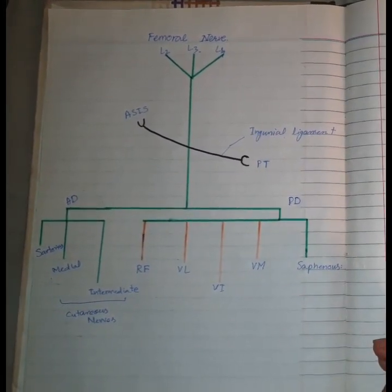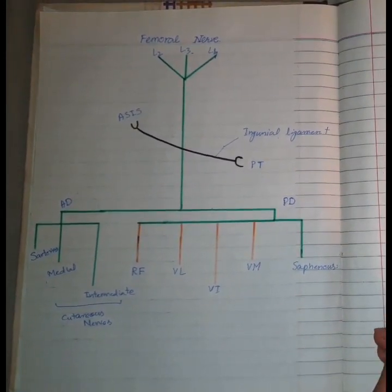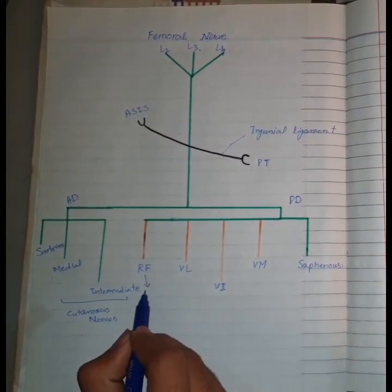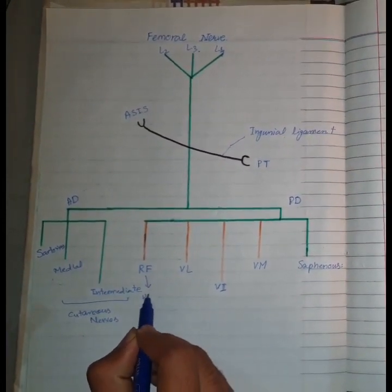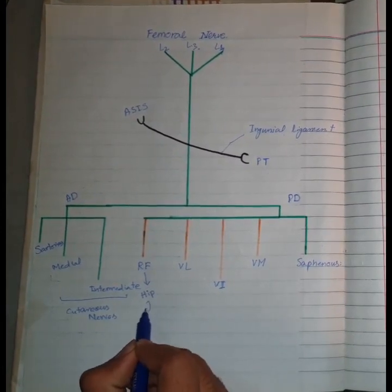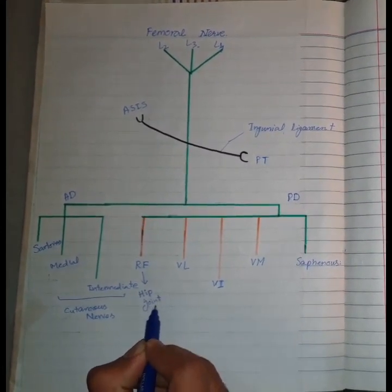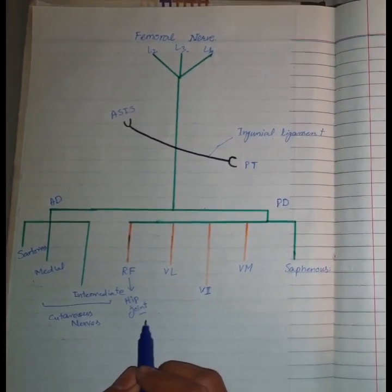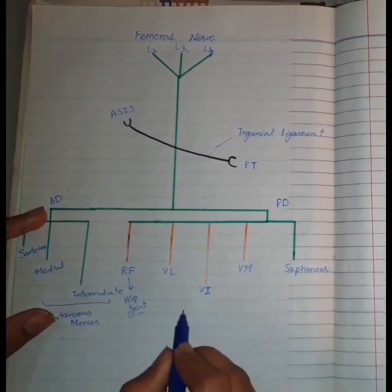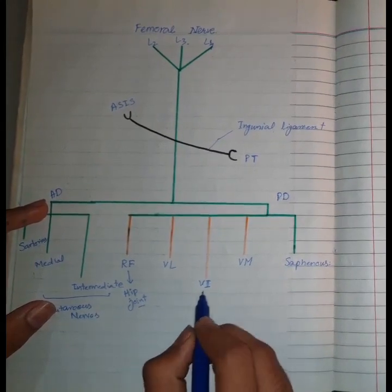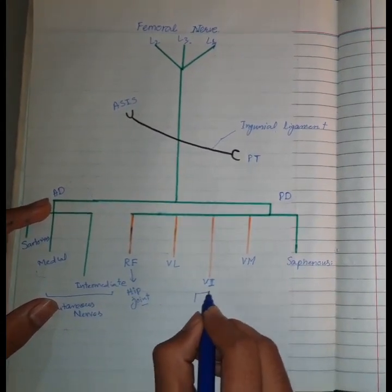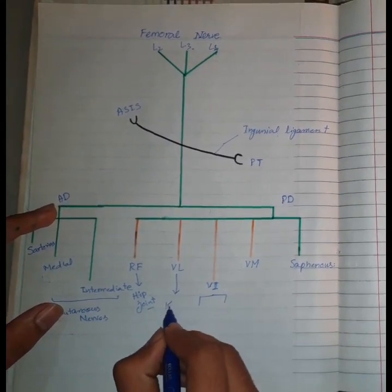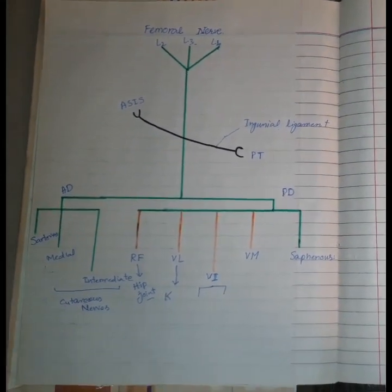We talk about the articular branches. The hip joint is supplied by the nerve to rectus femoris. As the rectus femoris has its relation with the hip joint, it must supply the hip joint. And all the three vasti supply the knee joint because they have their insertion nearer to the knee joint.